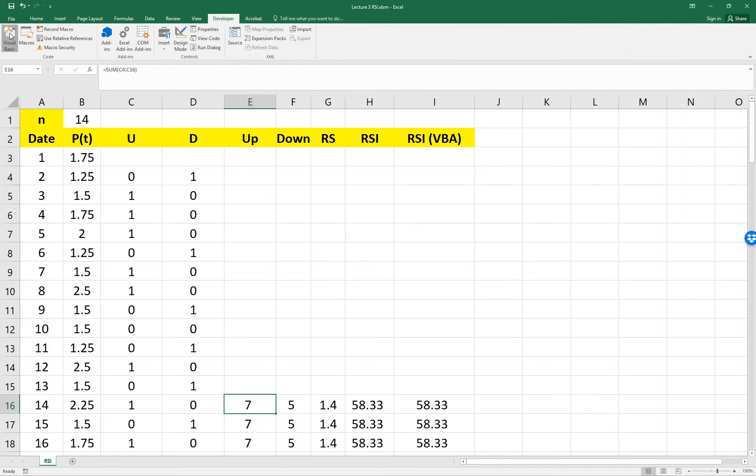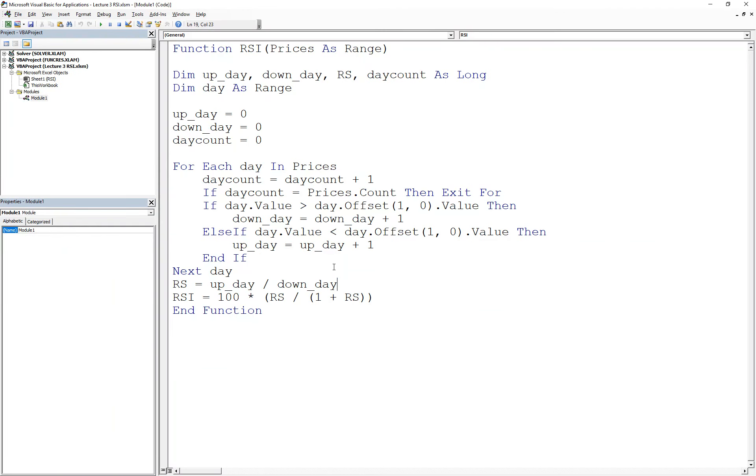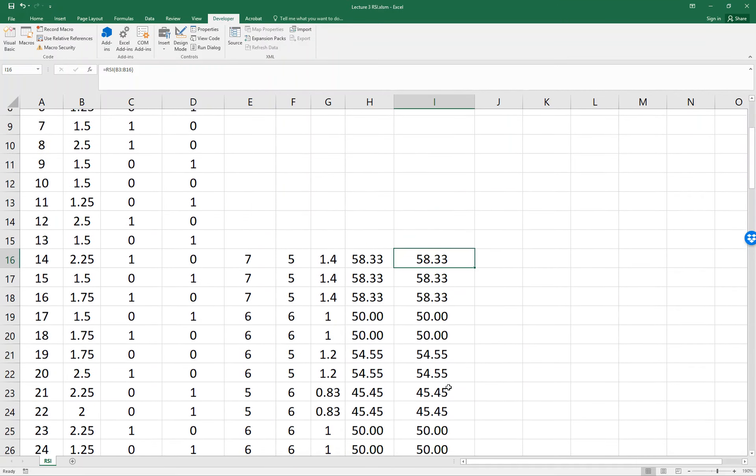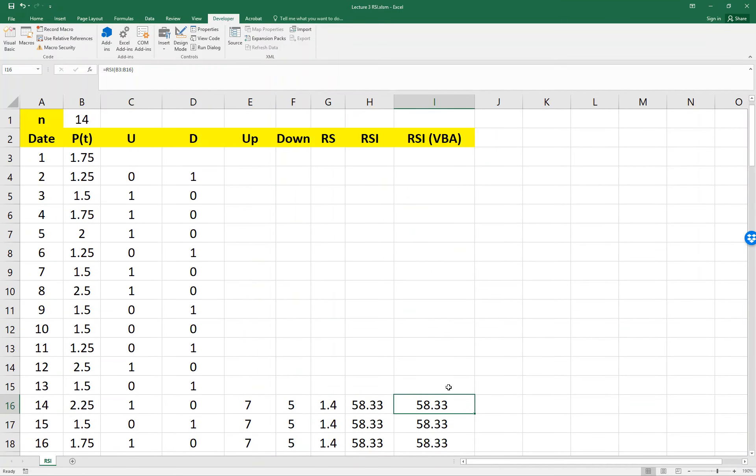So look at the VBA. So this is exactly what you see here with Up and Down. So let's run it. And this is the formula. And then you can see exactly the same. So this is how you can use RSI VBA to simplify the six columns.